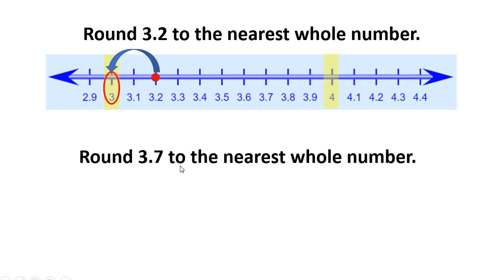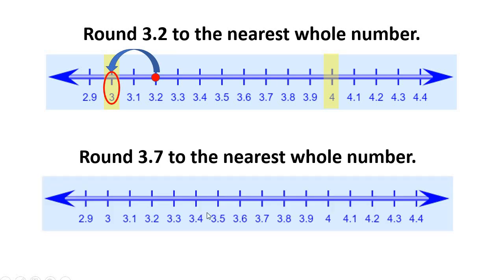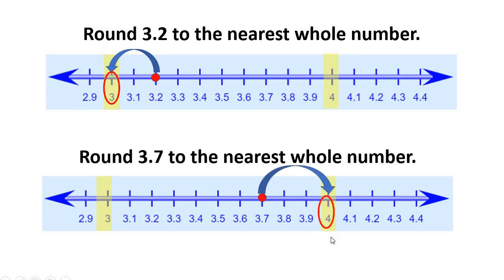Let's try another one. Three and seven tenths rounded to the nearest whole number. I'm going to find three and seven tenths on the number line. Just like three and two tenths, it's in between the whole numbers three and four. And then I simply look at my number line and decide which one it's closest to. And it's obviously closer to four, so it rounds up to four.